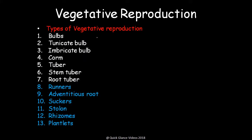In the previous video we covered bulbs, tunicated bulbs, imbricate, corm, tuber, stem tuber, and root. In this video we will be covering runners, adventitious roots, suckers, stolon, rhizome, and plantlets — with some examples so that you can briefly understand each particular mode of reproduction.